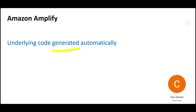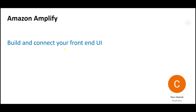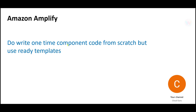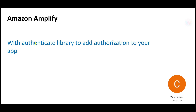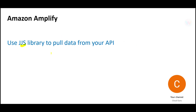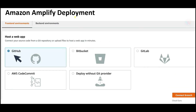If you're an expert, you can still write from scratch — nothing stops you. You can build and connect your front-end UI with backend services. Amplify provides a range of libraries: the Authenticate library to add authorization, the JJS library to pull data from APIs for microservices, and the iOS library to see the list of files in storage.